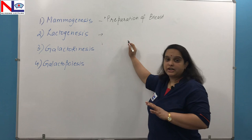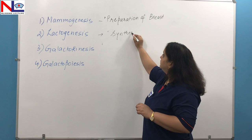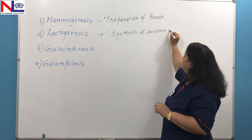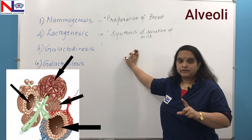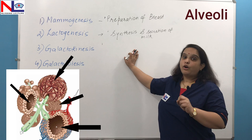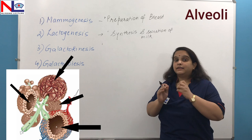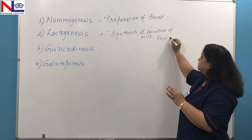After the preparation of breast tissues, what comes next is lactogenesis — that is the synthesis and secretion of milk. The main structure responsible for the secretion and synthesis is the alveoli. This is the main functional unit where the milk is producing and synthesizing. Milk is synthesizing from the alveoli and the responsible hormone in this phase is prolactin.